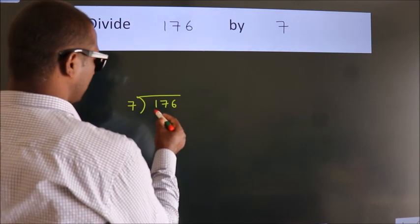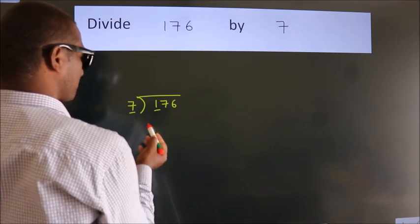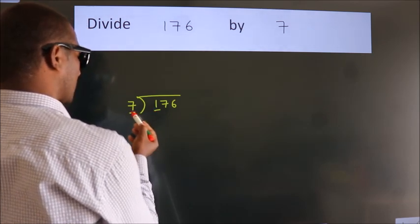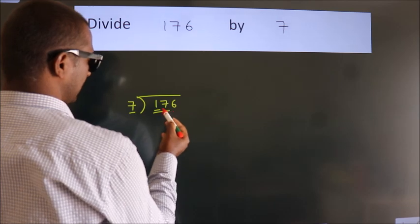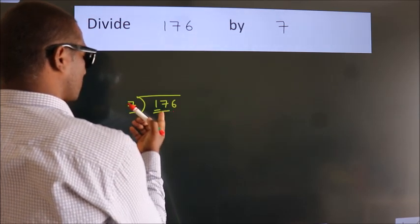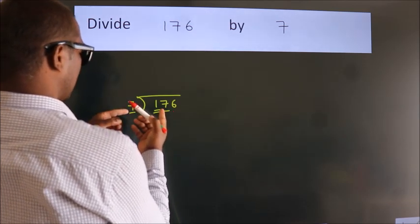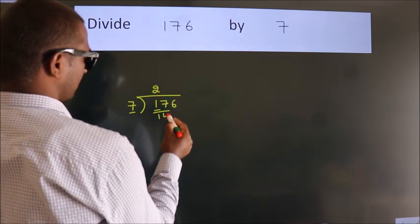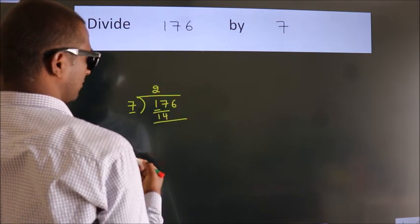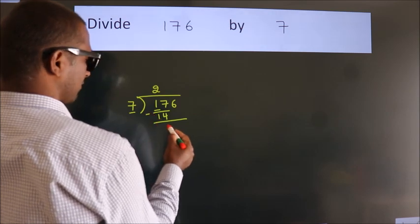here we have 1, here 7. 1 is smaller than 7, so we should take two numbers, 17. A number close to 17 in the 7 table is 7 twos, 14. Now, we should subtract. We get 3.